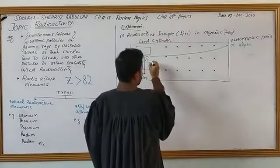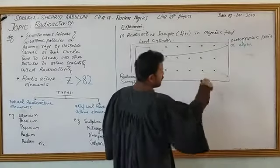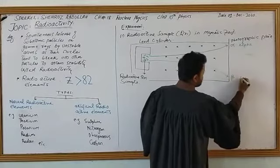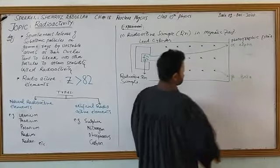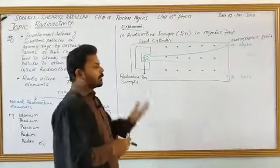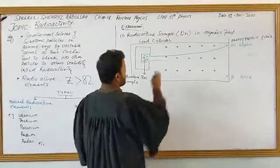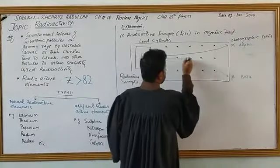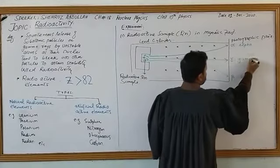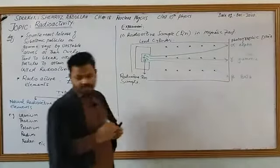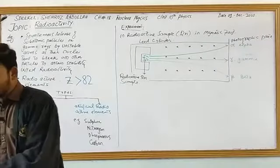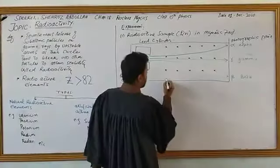Another particle, beta, is observed moving downward — deflecting in the opposite direction. A third emission, gamma, shows no deviation at all; it travels in a straight line. This whole channel was evacuated.